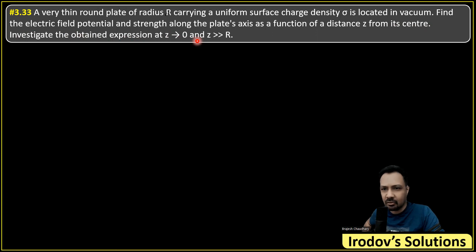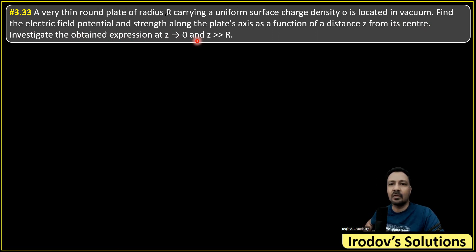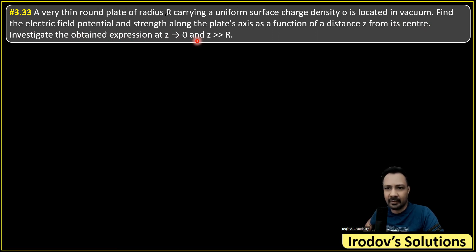This has to be a non-conducting disk, otherwise the surface charge density would adjust according to its geometry — it would be more at the edges and less at the center. Since it is uniform, it has to be a non-conducting disk. This is a direct result we normally use while teaching for IIT-JEE, but here we will get the full derivation.